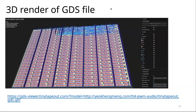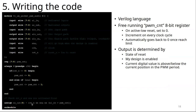To determine when to output a high signal, the logic at the bottom checks: reset is not active, my design is enabled by the multiplexer, and the current counter value is below the PWM input value — meaning now is the time to be on.